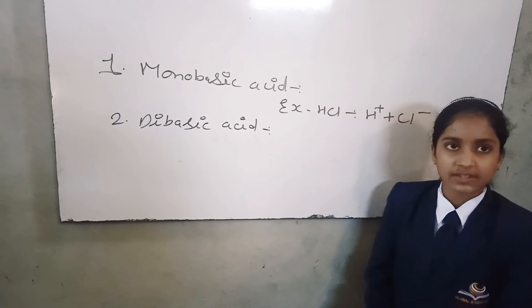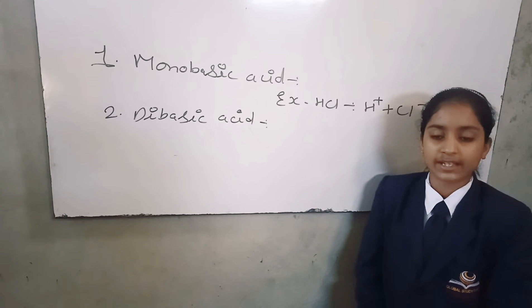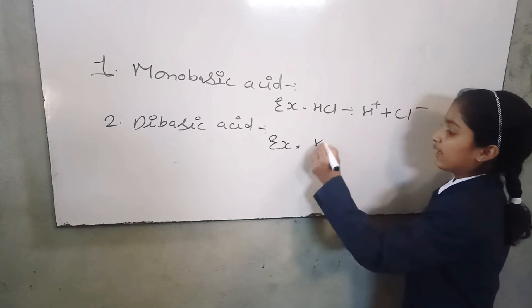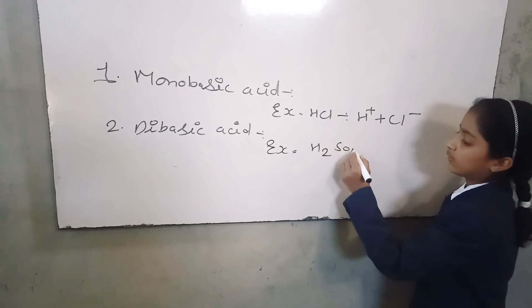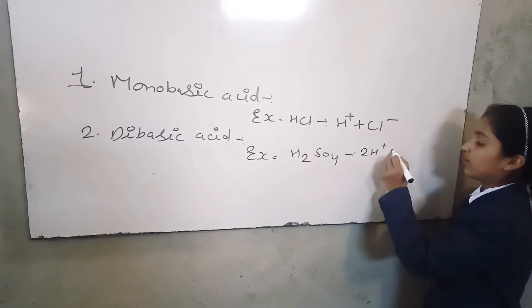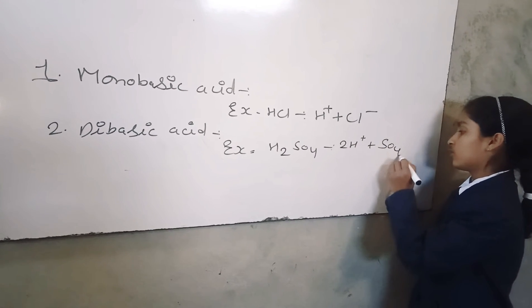The acid which give two hydrogen ions on aqueous solution. For example, H2SO4. When it breaks out, it makes 2H-positive plus SO4 2-negative.